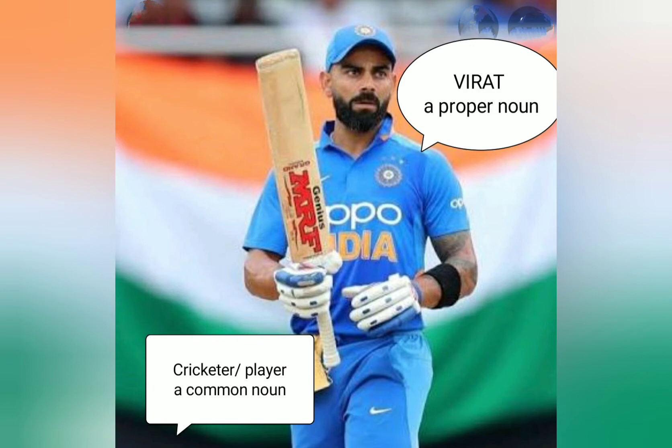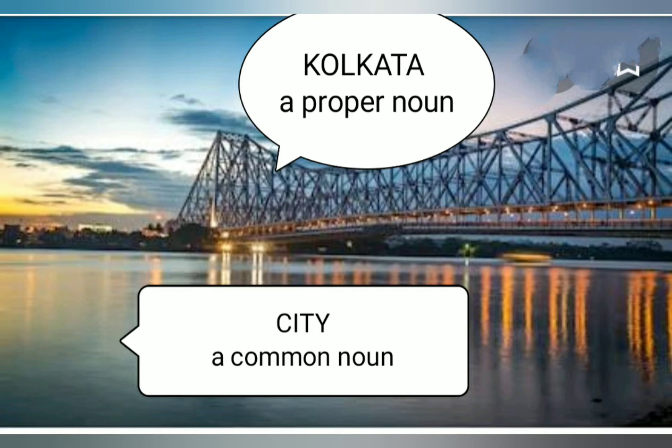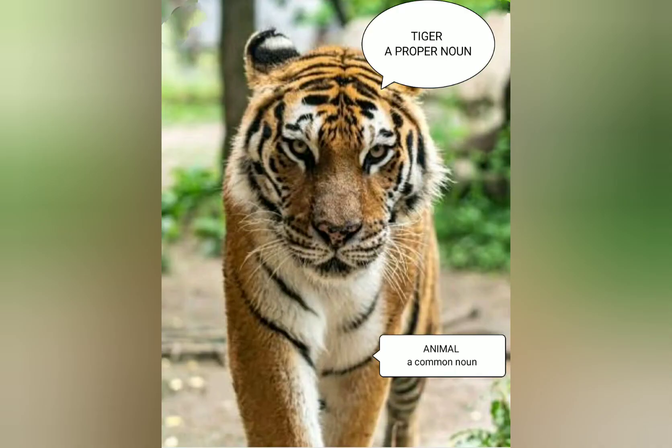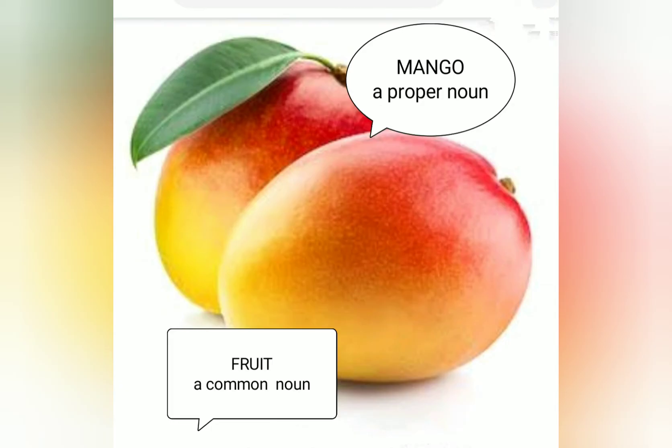Like mango — 'mango' is a specific name and 'fruit' is a common noun, so mango is a fruit. Tiger is an animal, so 'animal' is a common noun. Look at the picture — what is this? A parrot. So 'parrot' is the specific name, making it a proper noun, and 'bird' is a common noun.